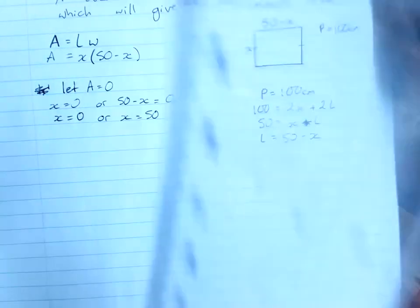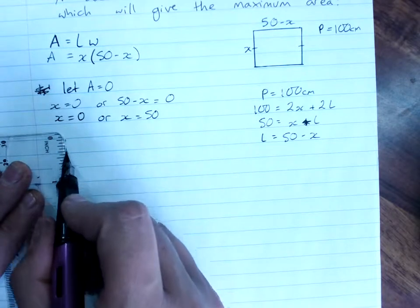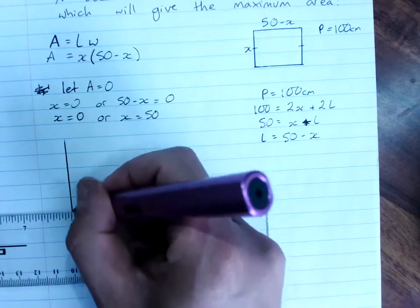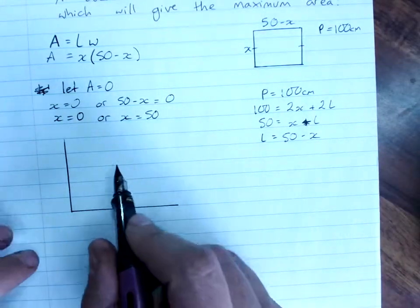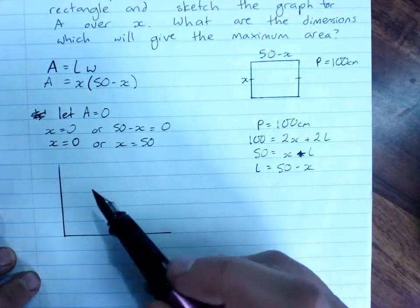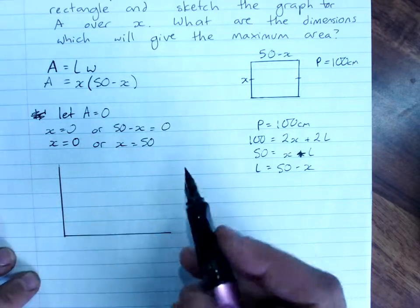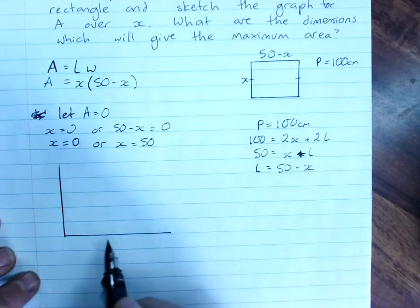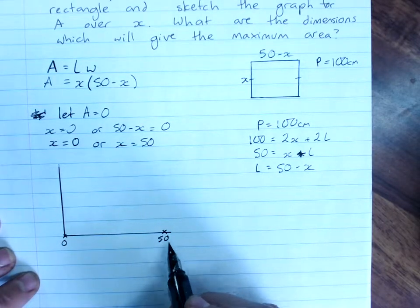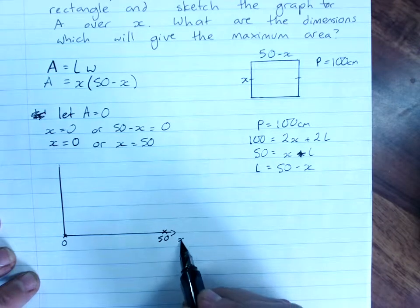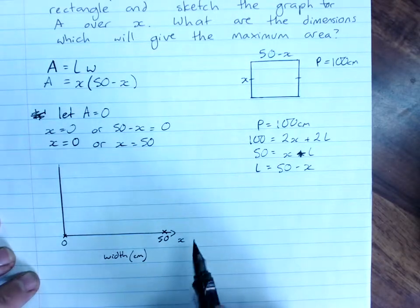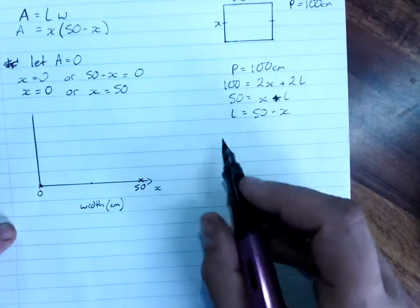So then we sketch the graph for area over width x. And of course, you will need to find the values of your turning point, because your turning point will give you the maximum of this graph, which will give you the maximum area. Now this one's dead easy, because you can see it's going to be a square of 25, 25. But the questions do get harder. So here is 0, here is 50, this is x, which is width in centimeters. If you know what it is, we say what it is.